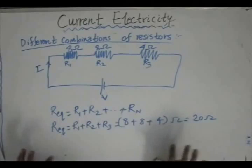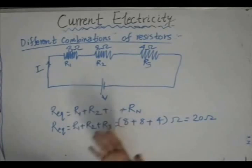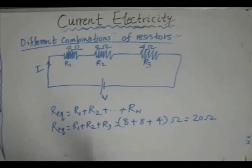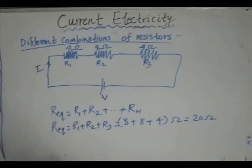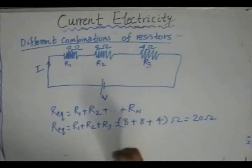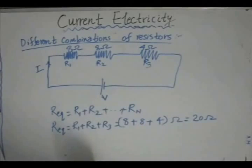We will use this concept later when dealing with voltmeters and ammeters, where we connect combinations of resistors either in series or in parallel. To summarize series connections: resistors are in series when the current through each resistor is the same, and the equivalent resistance is greater than even the largest individual resistor value present.